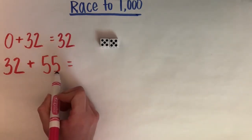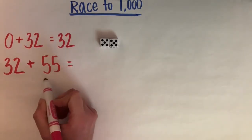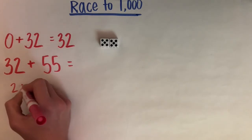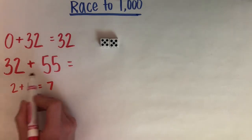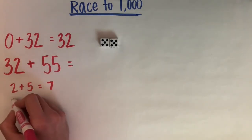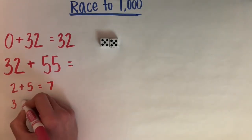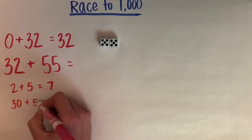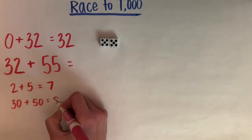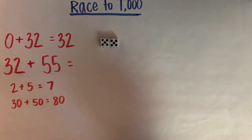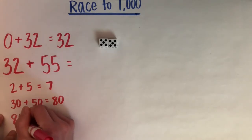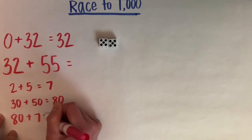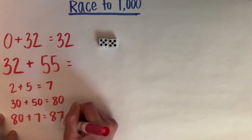I'm going to start with my ones and I know that 2 + 5 = 7, and then when I add my tens I know that 3 tens or 30 plus 5 tens or 50 equals 80. Now I need to add 80 + 7 which is equal to 87.